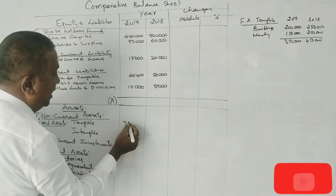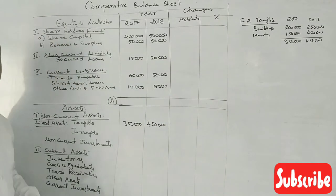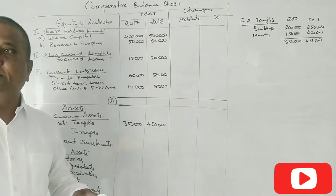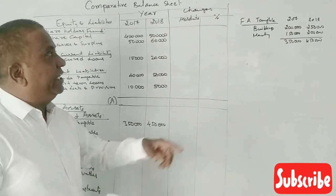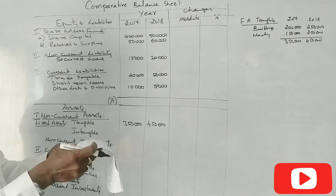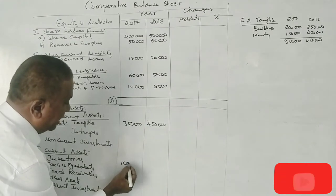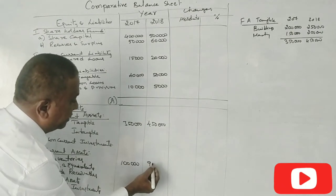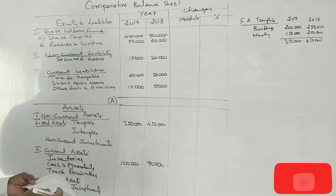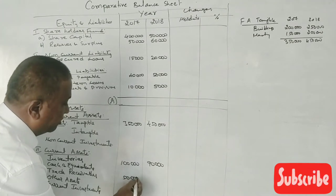Total tangible assets are 3,50,000 in 2017 and 4,50,000 in 2018. One thing to note: buildings, plant, machinery, furniture — note these amounts carefully. Next, inventory is 1,00,000 in 2017 and 90,000 in 2018. Trade receivables are 50,000 in 2017 and 75,000 in 2018.